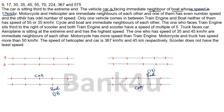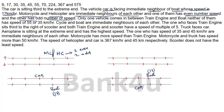Next clue: motorcycle and helicopter are immediate neighbors of each other, and one of them has an even number speed while the other has an odd number speed. If motorcycle has even speed, helicopter must have odd speed, and vice versa. We don't know their speeds yet, so we keep this on hold.